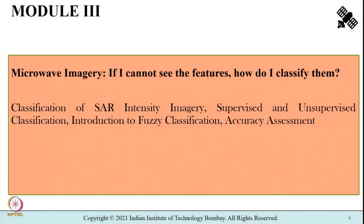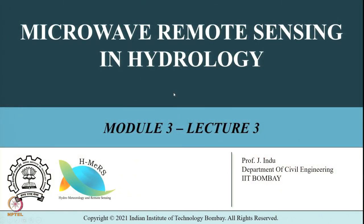Hello and welcome to today's class. We are in module 3, trying to understand about image classification. The tagline of this module is: if I cannot see the features, how do I classify them? This is with respect to microwave imagery. The contents of module 3 cover classification of SAR intensity images, supervised and unsupervised classification, and we will also get introduced to fuzzy classification.